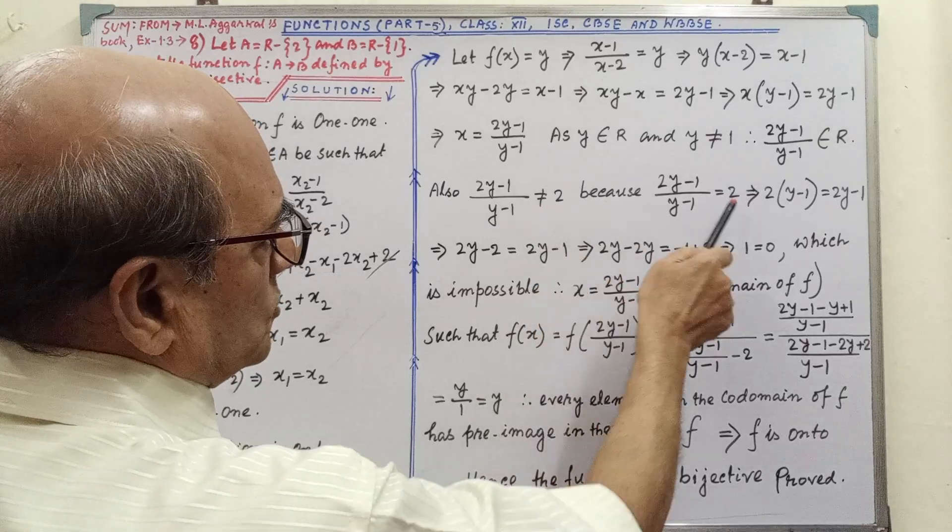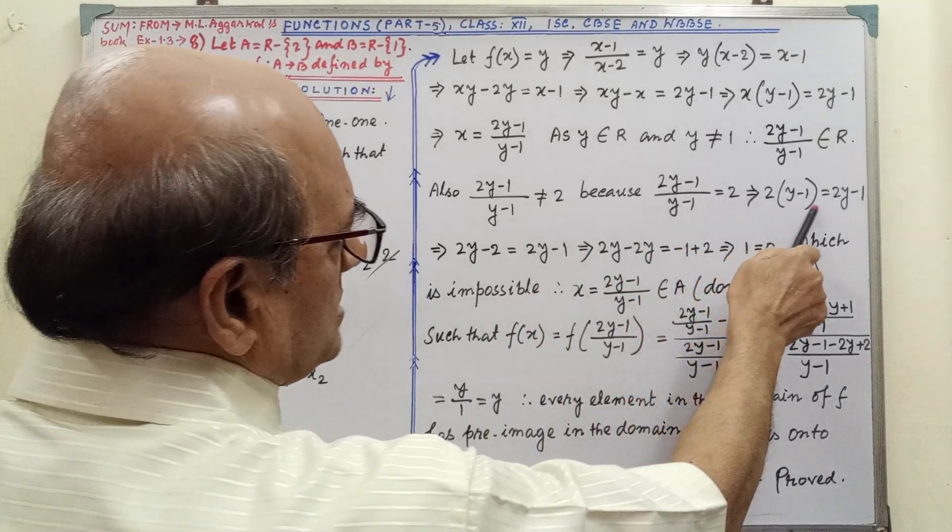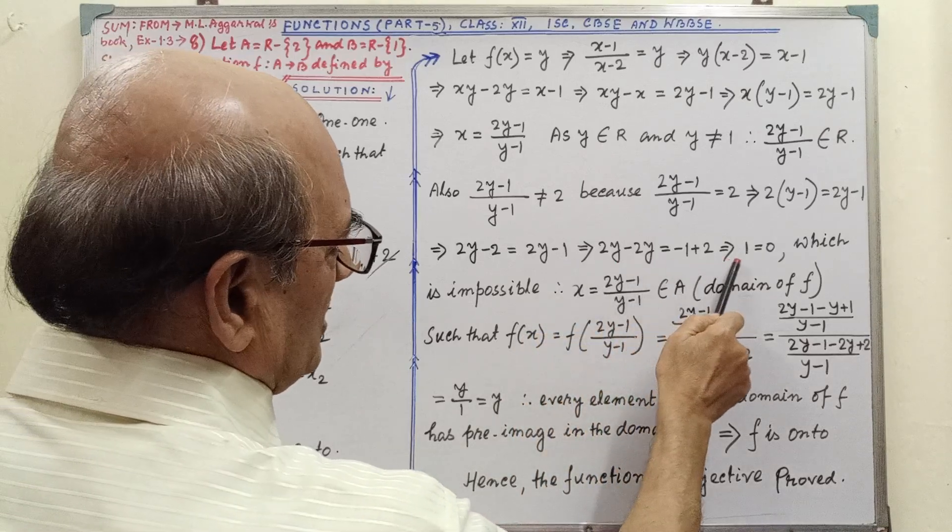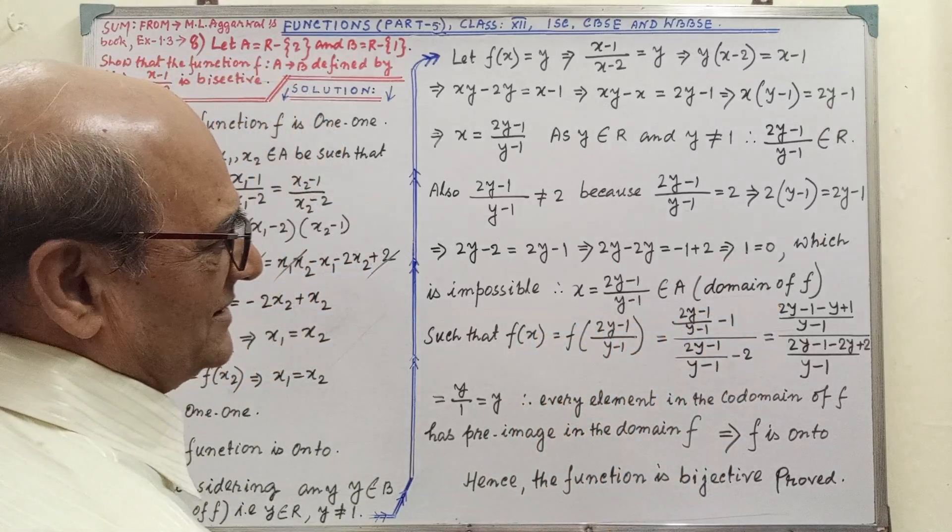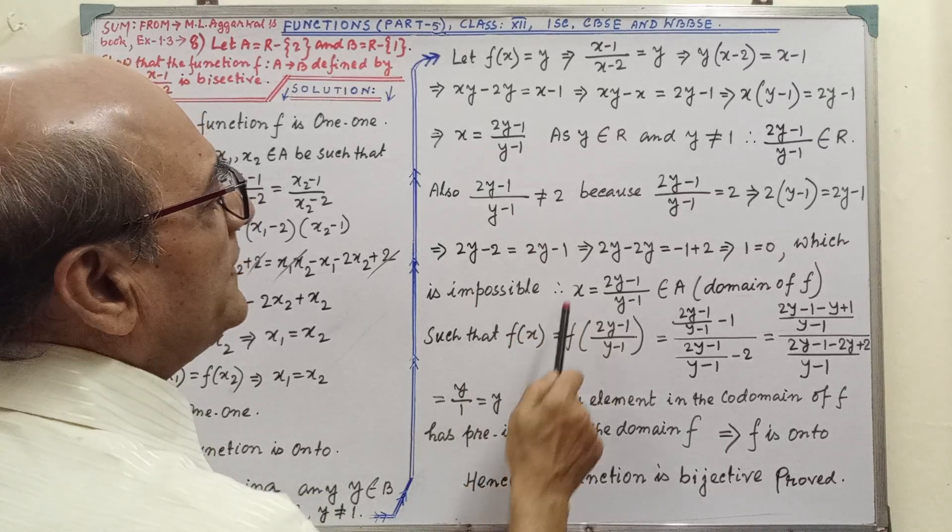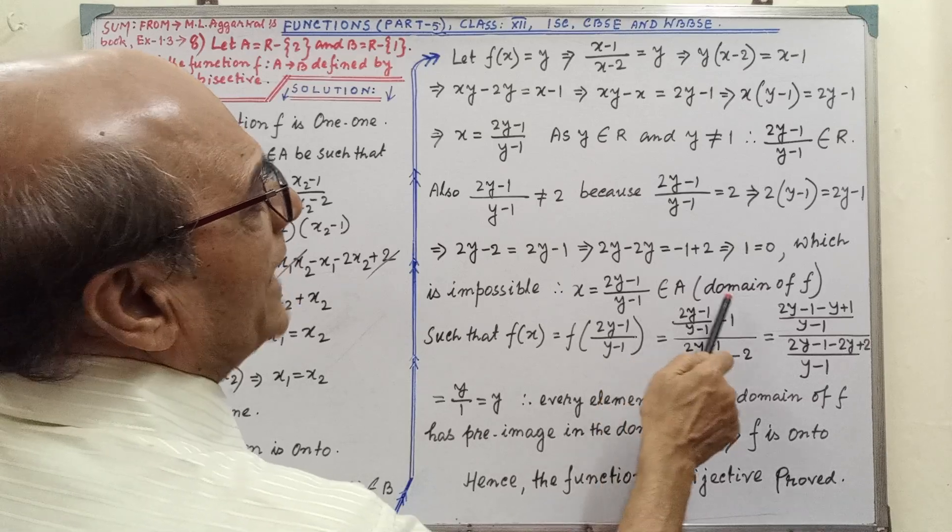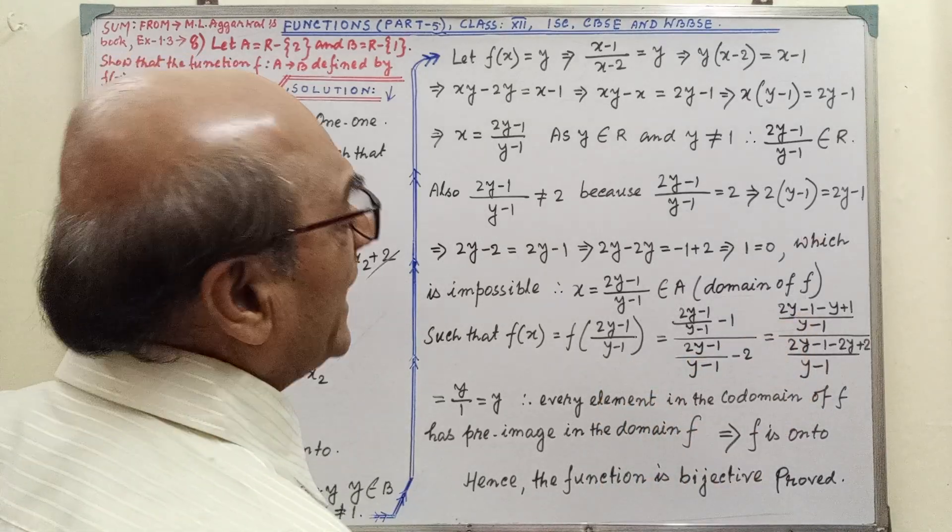this equal to 2, not equal to, so this equal to 2. Then by cross multiplication and simplification we are getting 1 equal to 0, which is impossible. Therefore, X equal to 2Y minus 1 divided by Y minus 1 belongs to R, that is the domain of F,